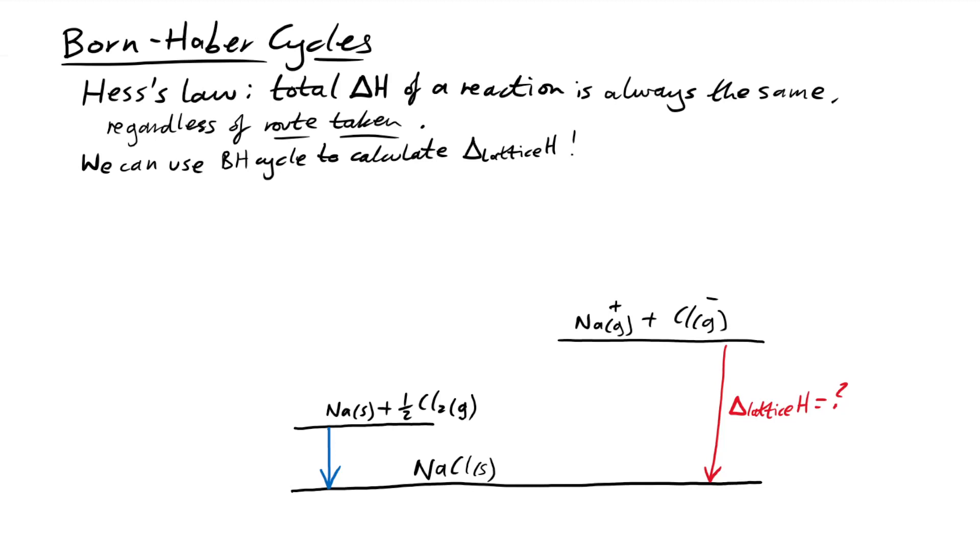So then how do we get from our Na solid and half chlorine gas all the way around to our ions? Well, first of all, we need to take into account our enthalpy change of atomization. So let's do that first for the chlorine. So that turns it just into Cl gas. And then we also need to do that for sodium to turn sodium atoms into sodium gas. OK, so we're nearly there. We've taken care of the states.